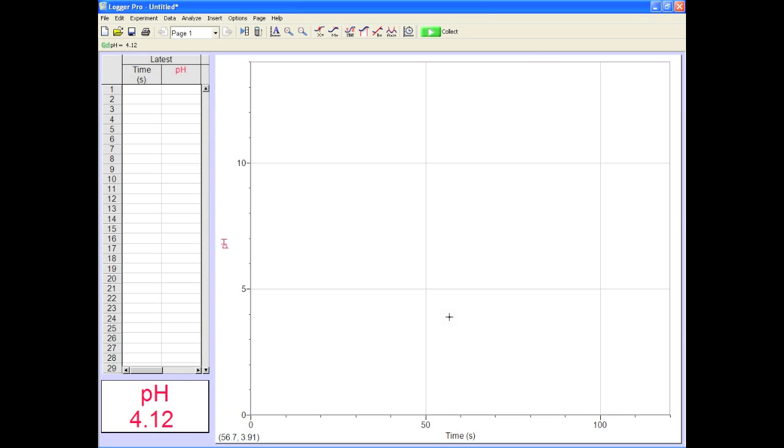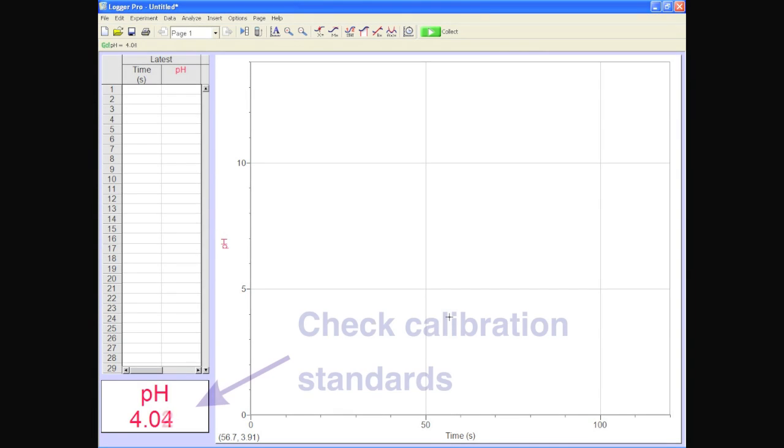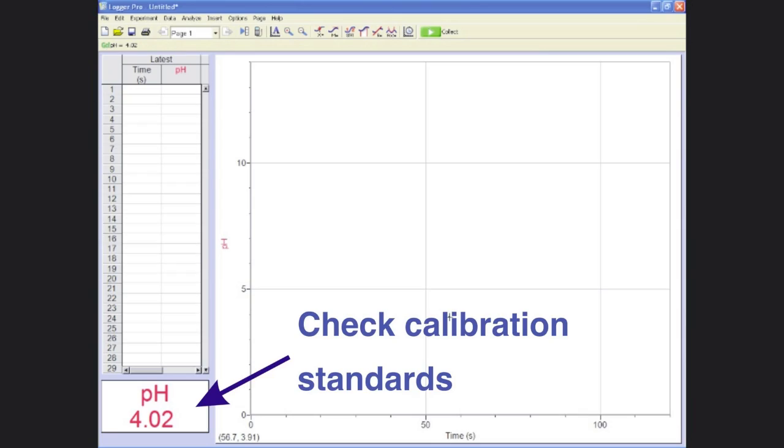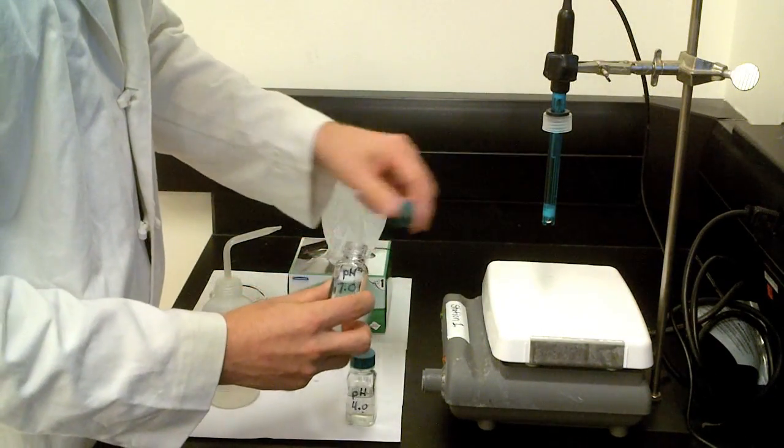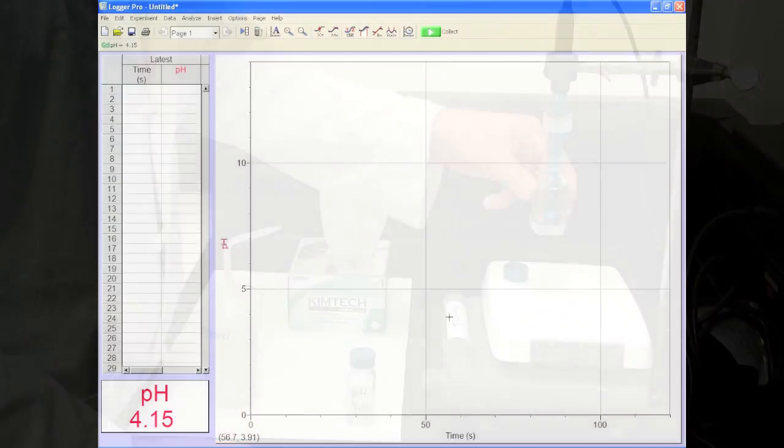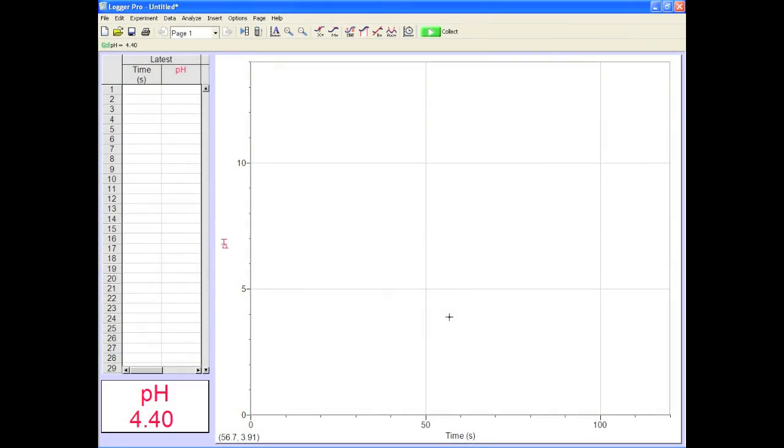If it doesn't, you'll need to recalibrate, but it's better to screw up now than in the middle of your experiment, right? Rinse and check out the other standard. Be patient. Give it a few seconds to stabilize before giving yourself a gold medal for pH probe calibration. That's not a real sport anyway.